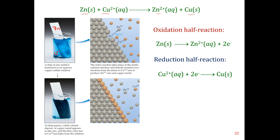Let's break this reaction into two parts. We have the oxidation half reaction and the reduction half reaction. The oxidation part: zinc solid goes to zinc 2+, giving off two electrons — zinc is being oxidized. The reduction half cell: copper 2+ combines with those two electrons to give us copper solid.